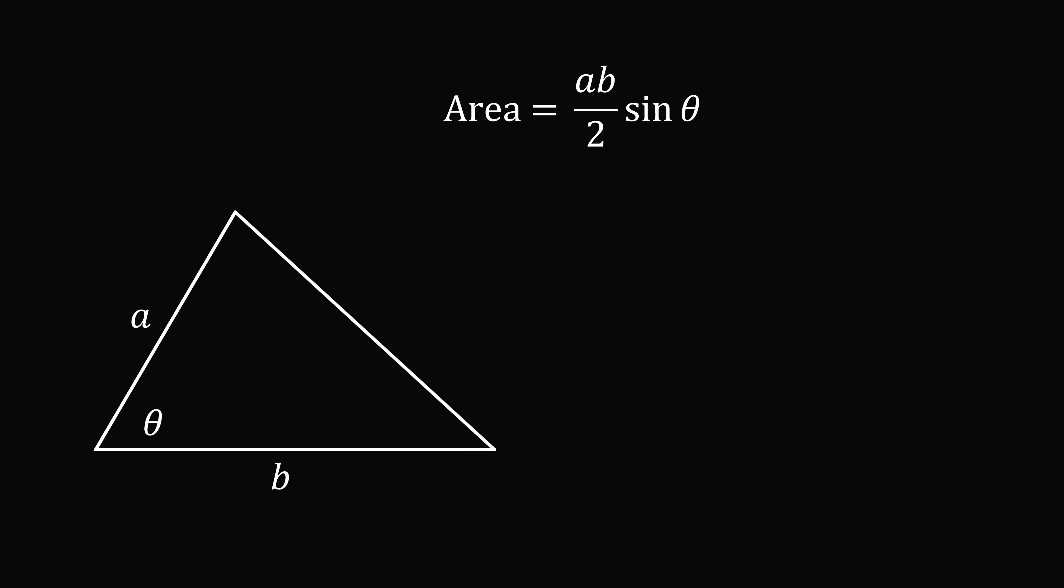Interestingly, this was first known to the Indian mathematician Aryabhata. In this case, we have a and b equal to 7 and 10. So the area only depends on the sine of theta where theta is the angle between these two sides.